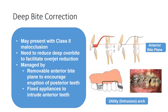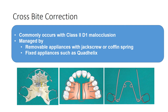When a class 2 division 1 presents with a deep bite, deep bite correction is necessary before overjet reduction. This can be achieved using a removable anterior bite plane, which encourages eruption of the posterior teeth, or using fixed appliances with utility arches to intrude the anterior teeth. If a posterior crossbite is present — as in cases of digit sucking — it can be corrected with removable appliances carrying a jackscrew or coffin spring, or fixed appliances such as the W-arch or quad helix.